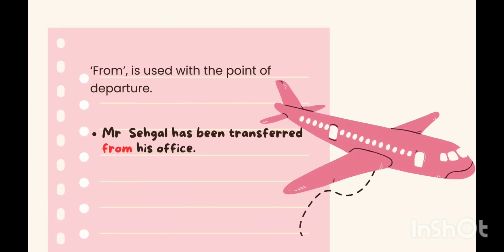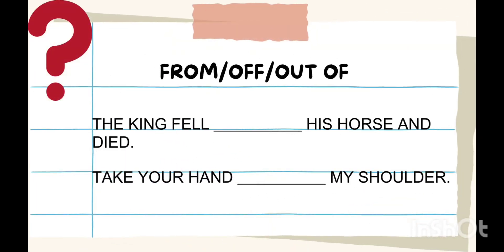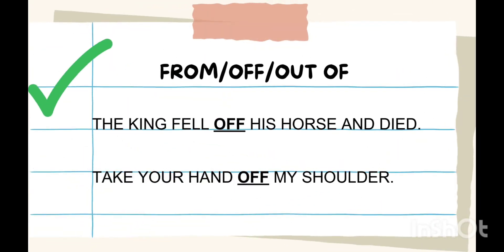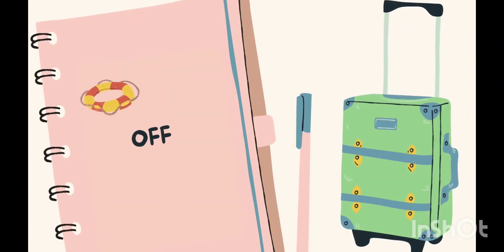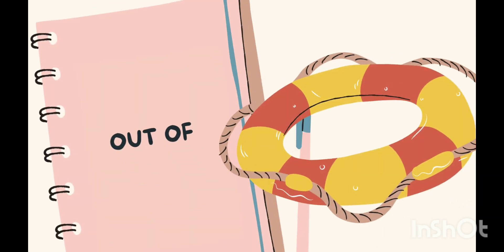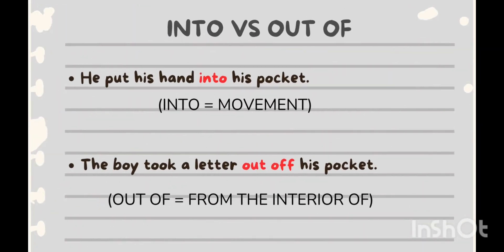Which preposition would you use here? 'The king fell ___ his horse and died,' and 'Take your hand ___ my shoulder.' The answer is 'off,' because it shows separation from the surface of, or down from. And 'out of' is just the opposite of 'into' — it means 'from the interior of.' Like: 'The boy took a letter out of his pocket.'